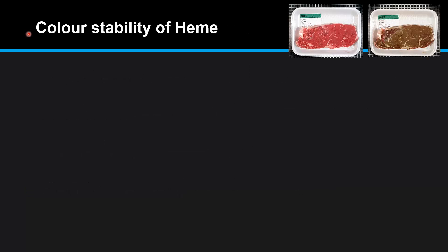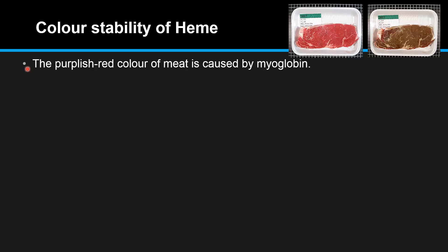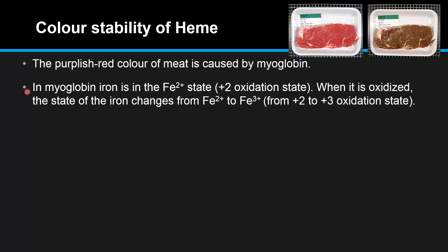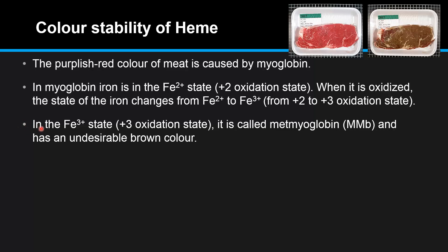Color stability of heme. The purplish red color of meat is caused by myoglobin. In myoglobin, iron is in the Fe²⁺ state, that is the +2 oxidation state. When it is oxidized, the state of the iron changes from Fe²⁺ to Fe³⁺, that is from the +2 to the +3 oxidation state. In the Fe³⁺ state it is called metmyoglobin and has an undesirable brown color. Here we can see meat that has been oxidized from red to brown because of the change in the oxidation state of iron from +2 to +3.